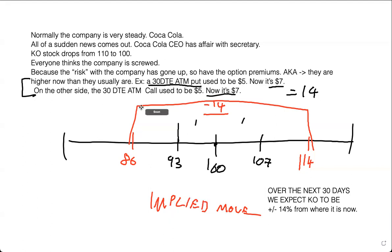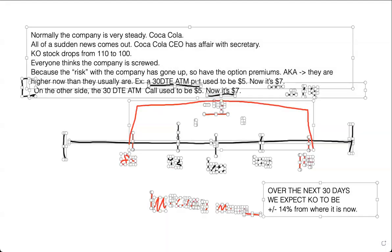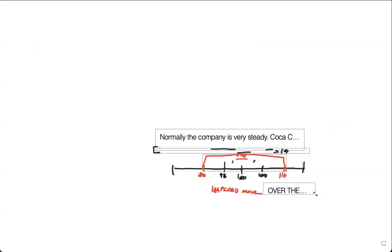Does that make sense? So the implied move is calculated by combining the at the money call and the put more or less. And it gives us a range. And that range is the amount that we're expecting the stock to move, or the market is expecting the stock to move over the next 30 days.